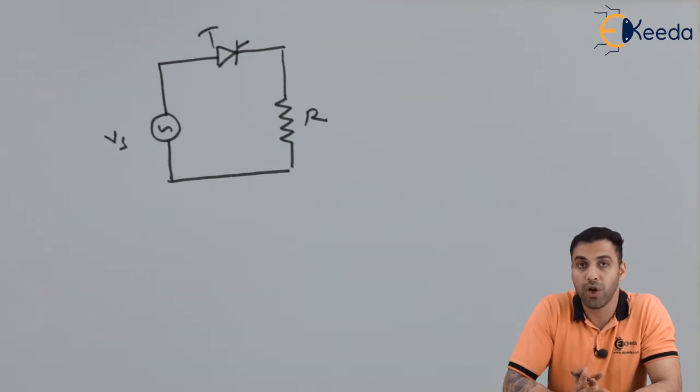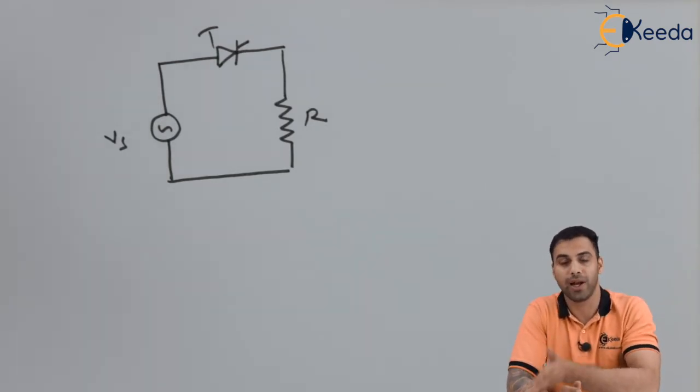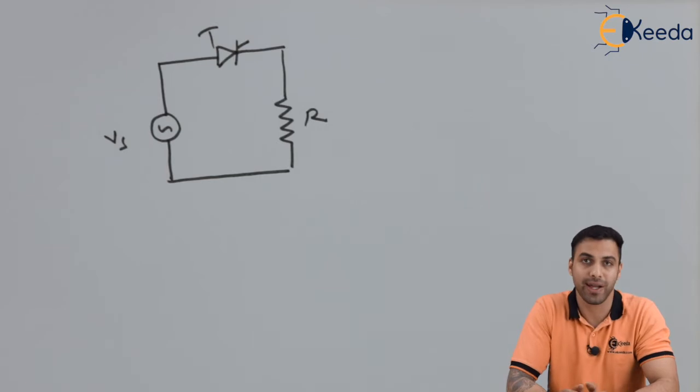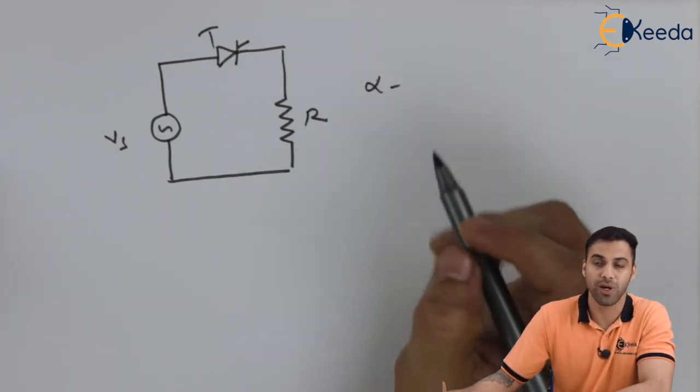So in this case we can only control the positive cycle of the AC voltage across the output. Now we will not be getting the negative pulses rectified across the output because thyristor controls the flow of electron or flow of current in only one direction. So here also we can change the firing angle and control the voltage accordingly.